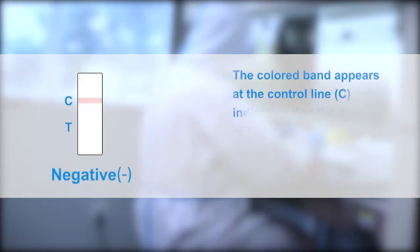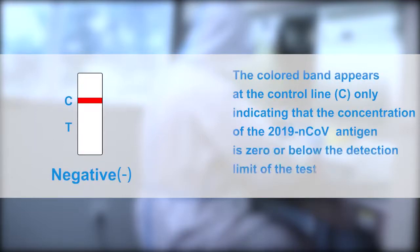Negative result: The colored band appears at the control line C only, indicating that the concentration of 2019 novel coronavirus antigen is zero and below the detection limit of the test.